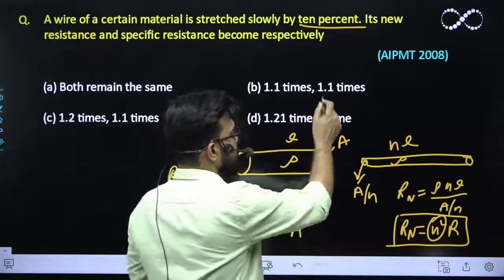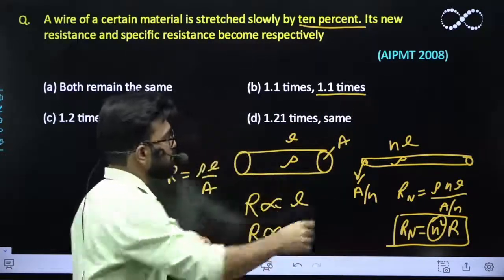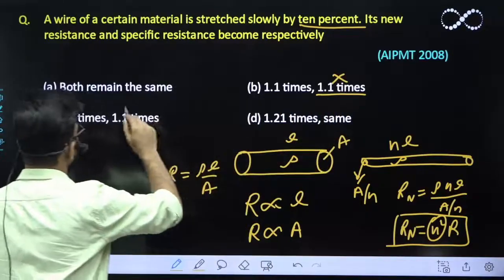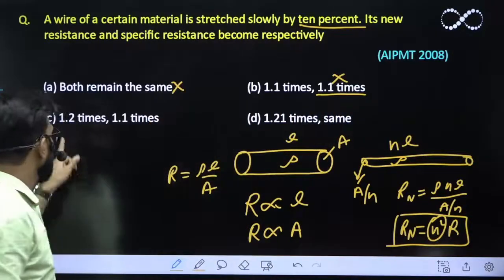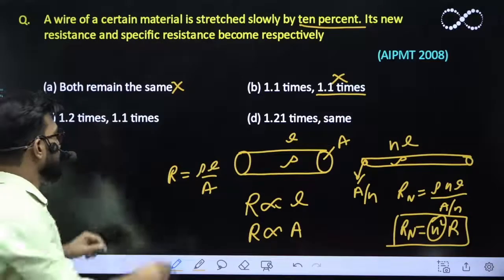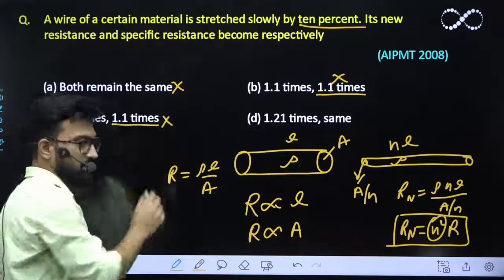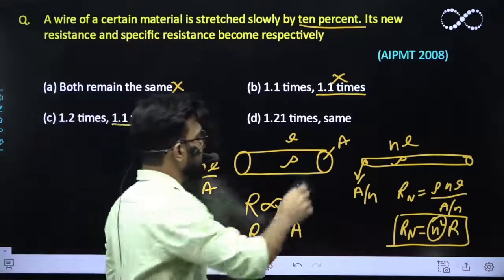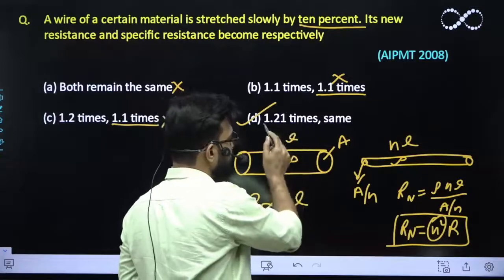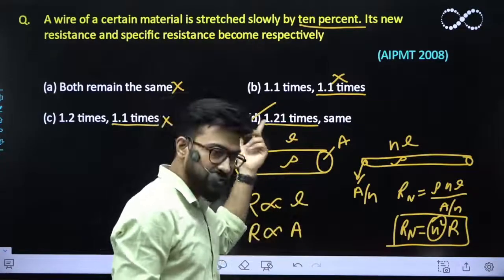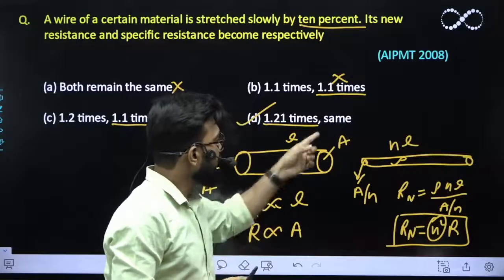Here this statement is also wrong, 1.2 times and 1.1 times. Specific resistance also does not vary so only option that we are getting is the fourth option which is obviously, if length increases so that means resistance should also increase and its specific resistance remains same.